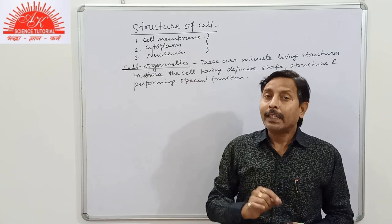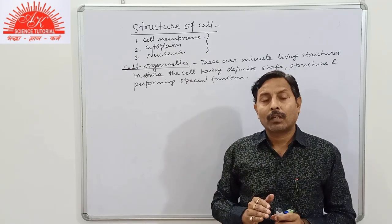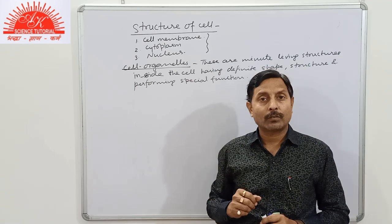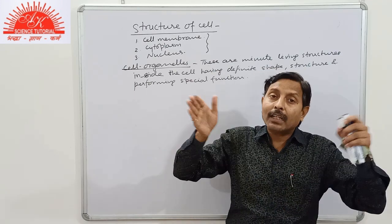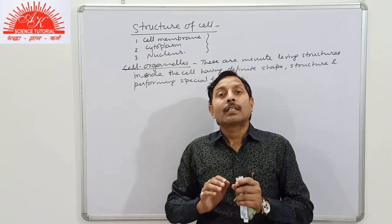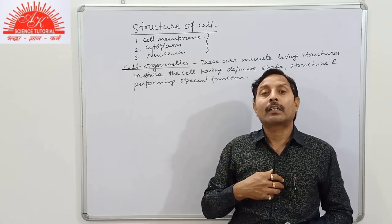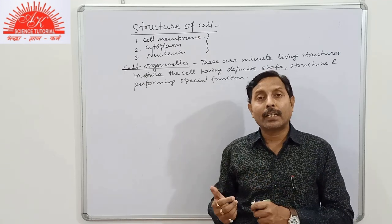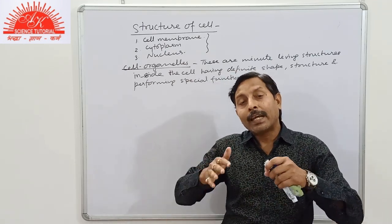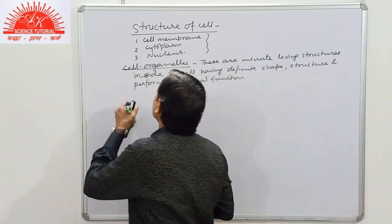Cell organelles in a cell are similar to the organs in the body of a complex organism. Inside the cell there are mitochondria, ribosomes, Golgi body, endoplasmic reticulum, and so on — they perform their individual functions and together help in performing the life activities of the cell. Similarly, in a complex organism, organs like lungs, kidney, heart, liver, stomach, and intestine all perform individual functions but together help in performing life processes.